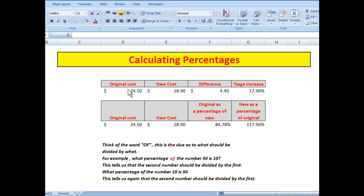Here in the example spreadsheet, I have an original cost of $24.50 and a new cost of $28.90. Obviously, when I click on this cell and look up here in the formula bar, I've deducted E8 minus D8 to show me the difference. Now I know the difference is $4.40.